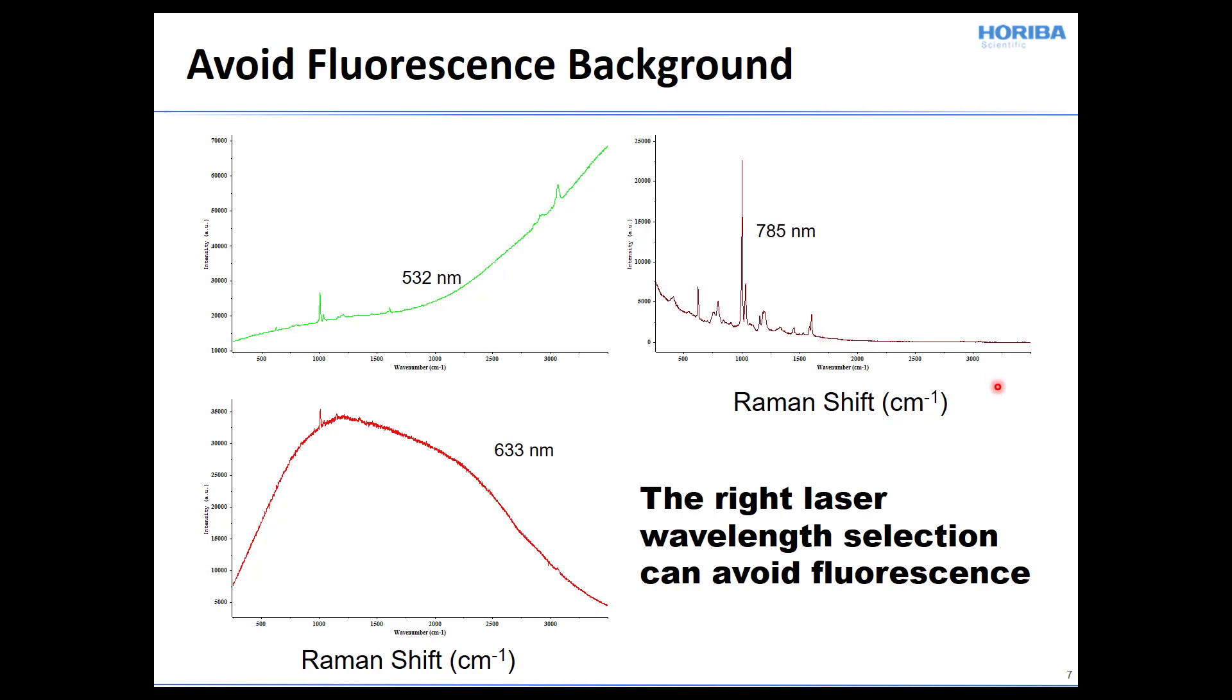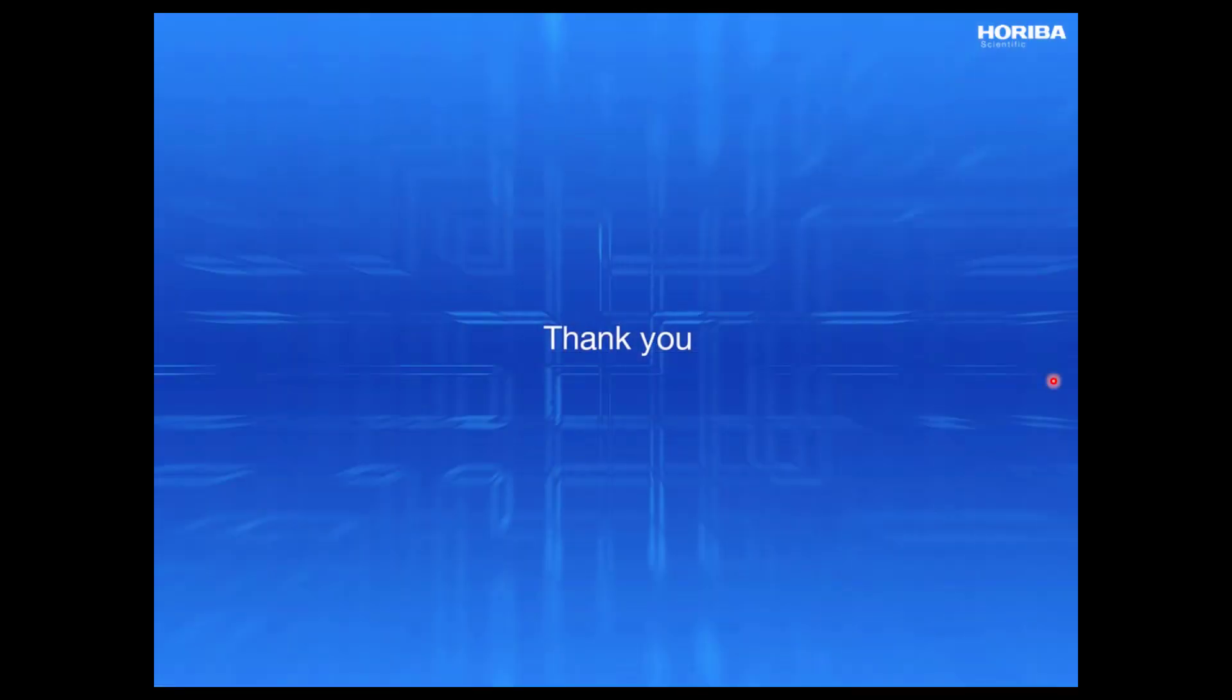So the point here is that the right laser wavelength selection is key to avoiding fluorescence. And so I hope that with our discussion today, you have a better idea of the problem of fluorescence in Raman spectroscopy, and one way to avoid that is through the proper selection of the excitation wavelength. Thanks.